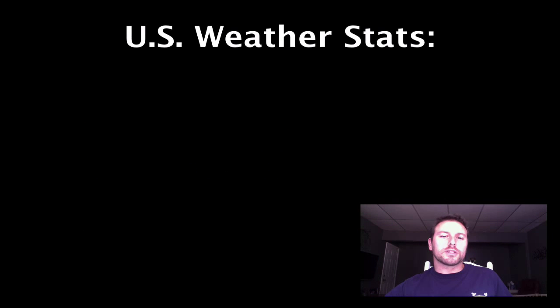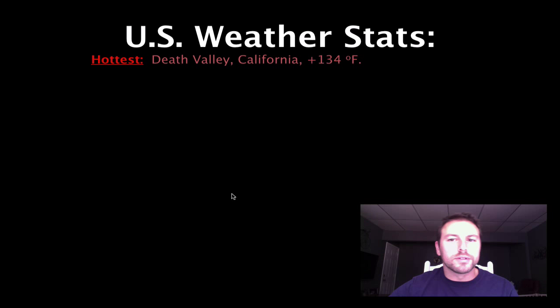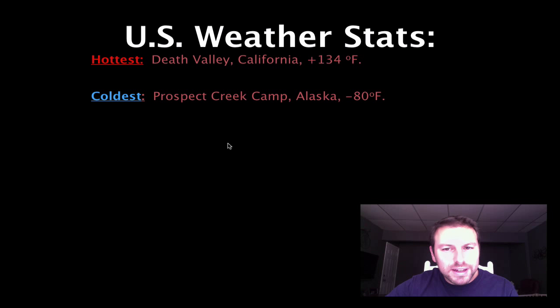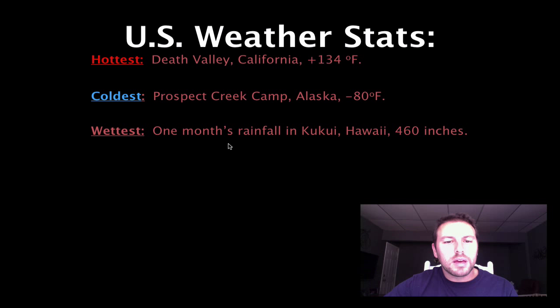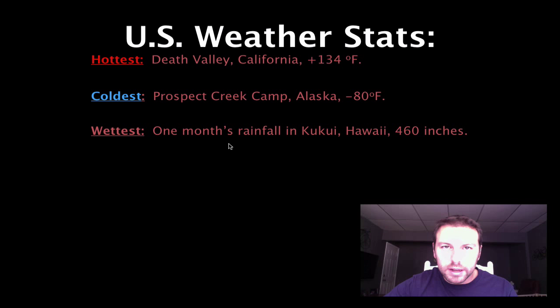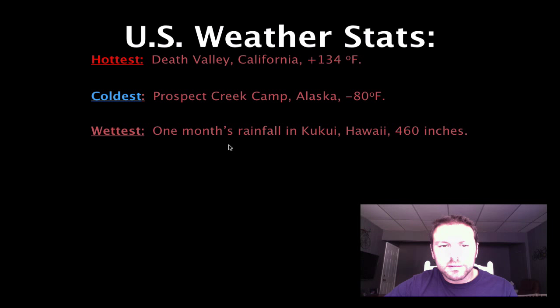Here are some weather statistics across the United States that you might want to be familiar with — you don't have to commit them to memory, but they're definitely pretty interesting. The hottest is Death Valley, California, at about 134 degrees Fahrenheit. The coldest is Prospect Creek Camp in Alaska at negative 80 degrees Fahrenheit. The wettest is in Hawaii with 460 inches of rain in one month — pretty amazing.